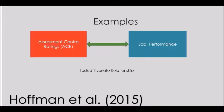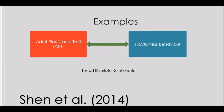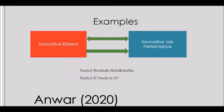Here are some examples. Hoffman et al. 2015 tested the predictability of their construct — assessment center ratings — by testing the bivariate relationship between assessment center ratings and job performance. Similarly, Shen et al. 2014 tested the bivariate relationship between adult playfulness trait and playfulness behavior to test predictive validity for the adult playfulness trait. Onward 2020 tested the bivariate relationship between innovative esteem and innovative job performance.